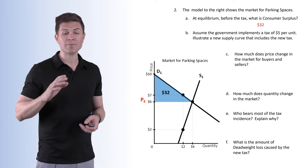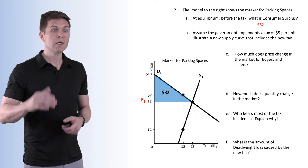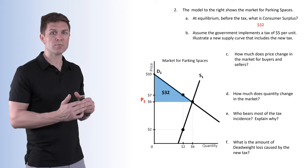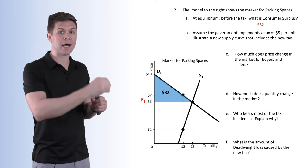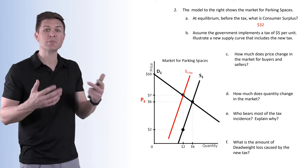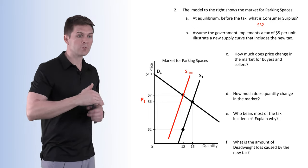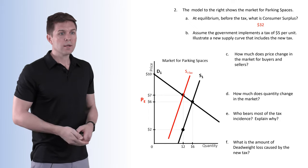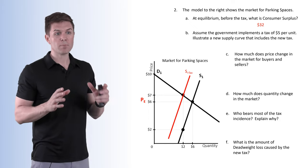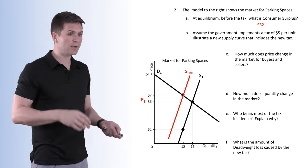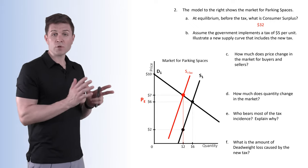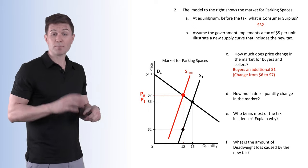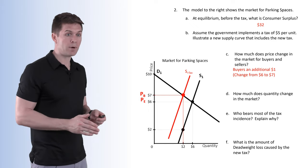Assume the government implements a $5 per-unit tax. Illustrate a new supply curve that includes the new tax. We need to shift the supply curve up by $5 and name our new curve S-plus-tax. The curve is going to be $5 higher on the graph than the old one. Our new equilibrium is at $7 — that's going to be the new equilibrium price and the price that buyers have to pay.